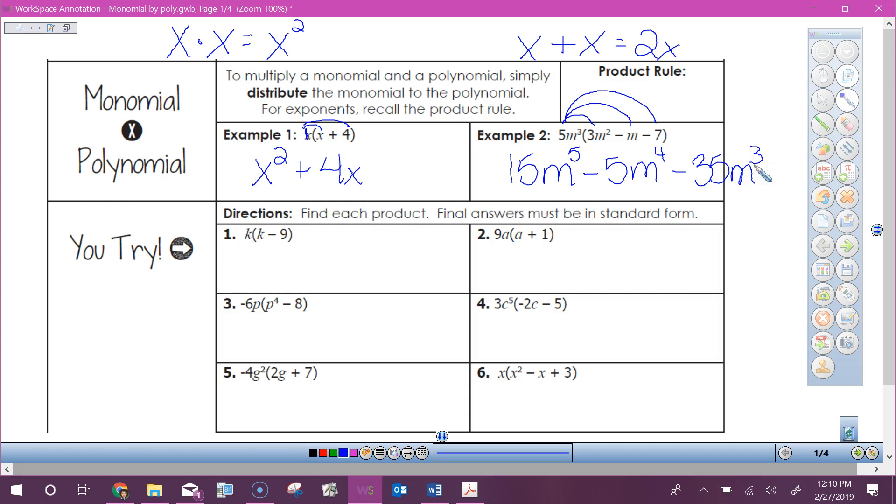One thing we need to be careful with is when there's opposite signs. Look at number three. I'm not going to make us go through all of these because we just talked about them. But number three, if I multiply the first part, I get t to the fifth. And then if I have a negative times that minus on the inside, I get a plus what? Just 48t. So I'm taking negative 6t times 8.